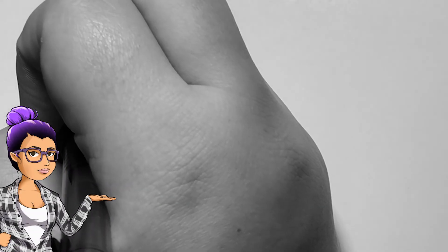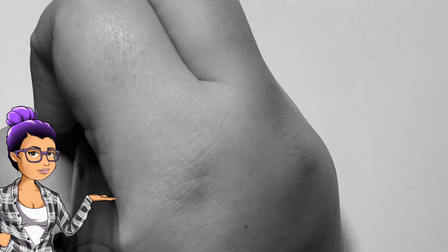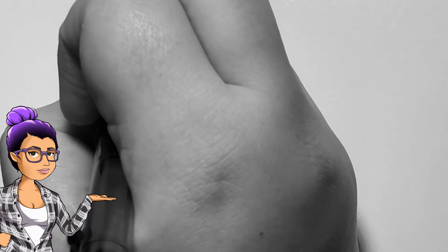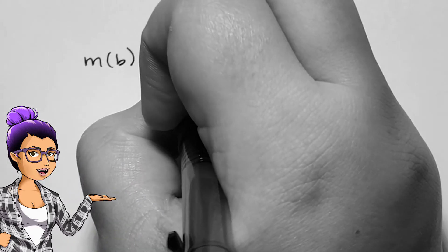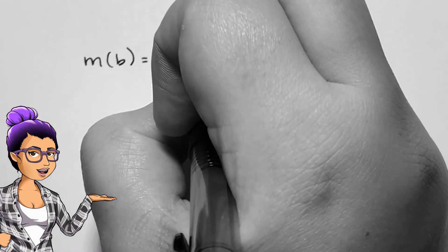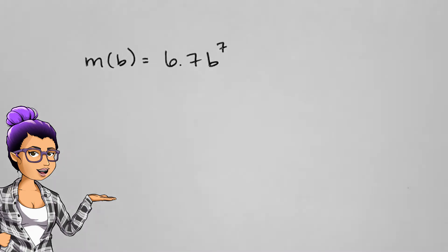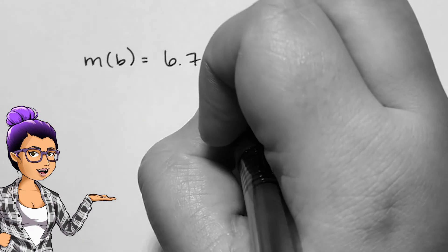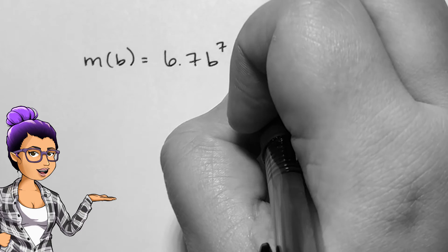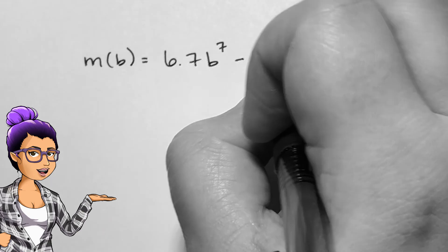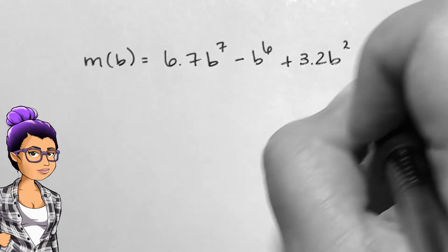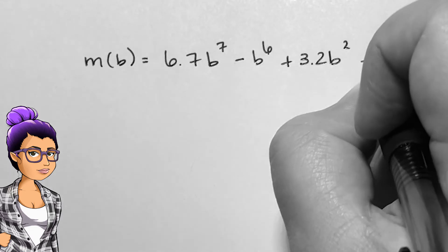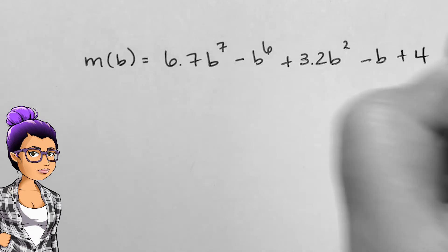We might use the Intermediate Value Theorem to narrow down whether or not there's a zero in a certain interval without having to solve for the zeros. In the function m of b equals 6.7b to the 7th minus b to the 6th plus 3.2b squared minus b plus 1, I can use the Intermediate Value Theorem to determine whether or not there are zeros on the interval negative 9, 1.